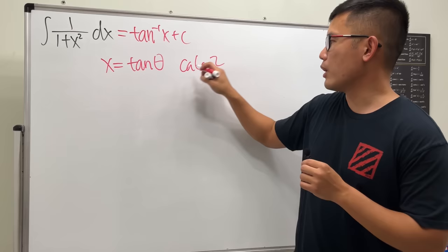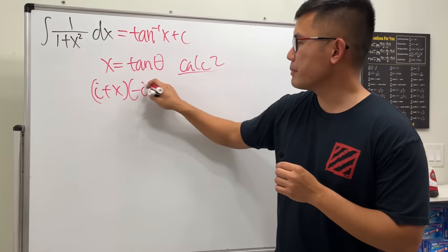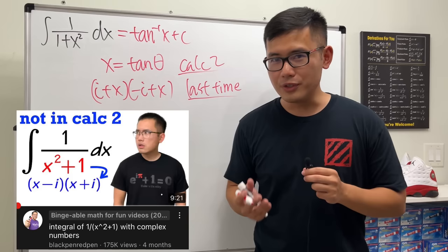But last time I showed you how we can use complex numbers to do this. That is to factor 1 plus x squared as (i + x) times (−i + x), then do partial fractions in the complex world. But I did that for you last time already. If you haven't seen that video, go ahead and watch that after this video. The link will be in the description.